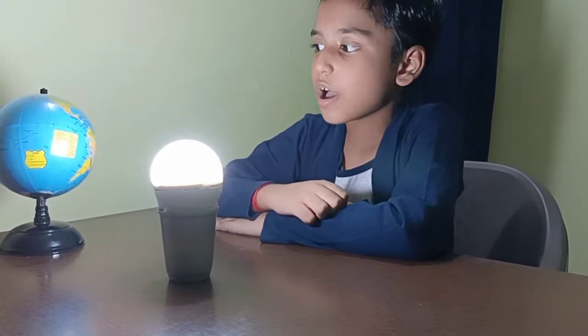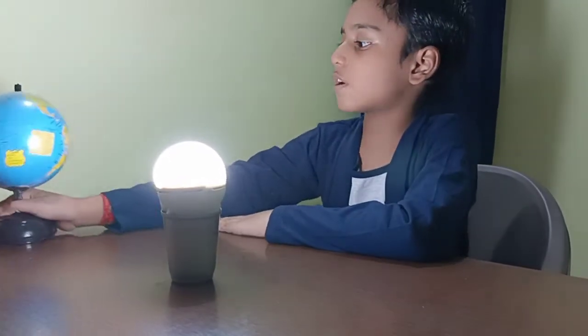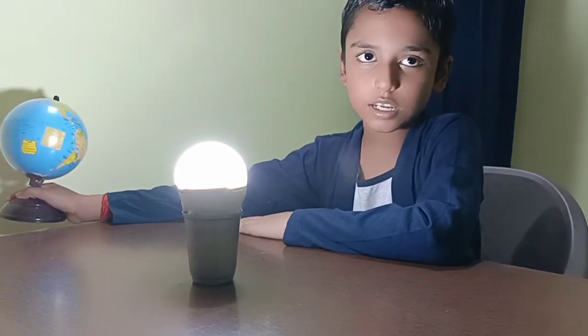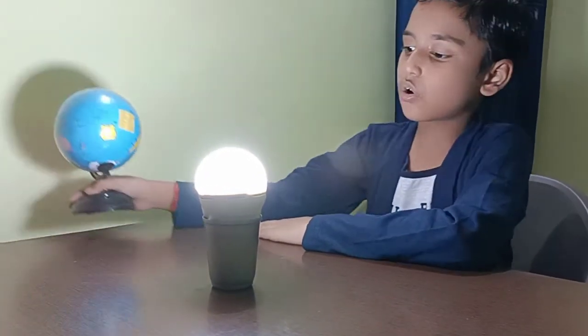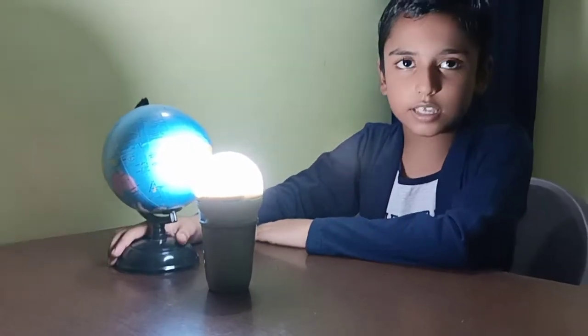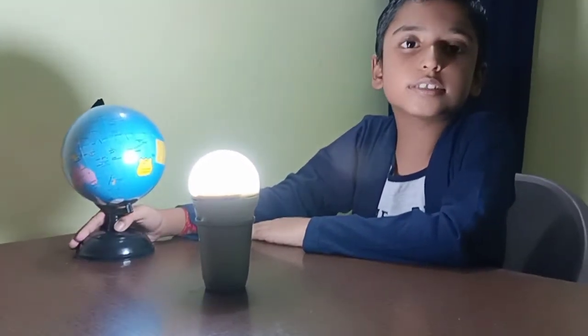Maximum people think when the earth is far from the sun, it is winter season and when the earth is close to the sun, it is summer season. It makes sense but it is incorrect.